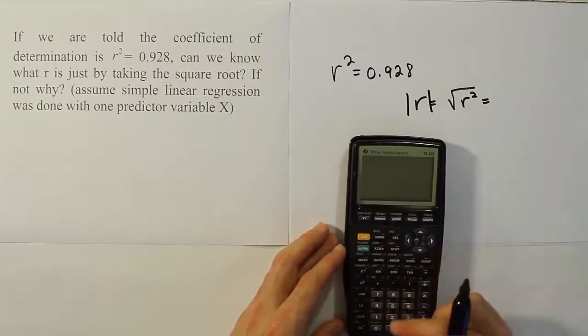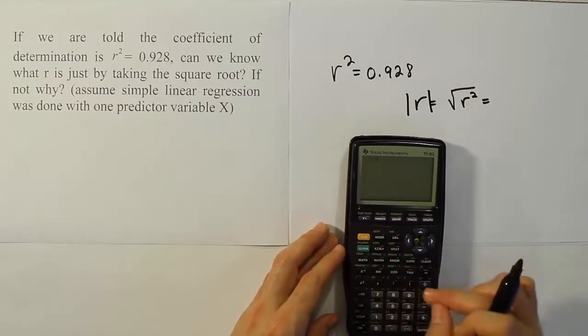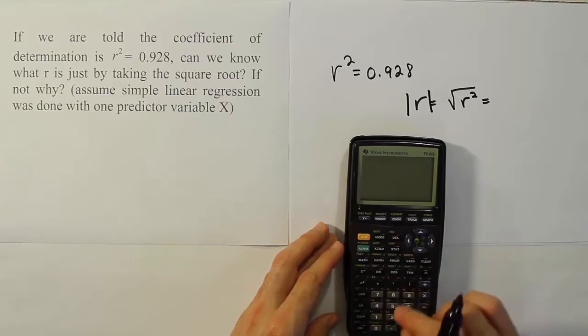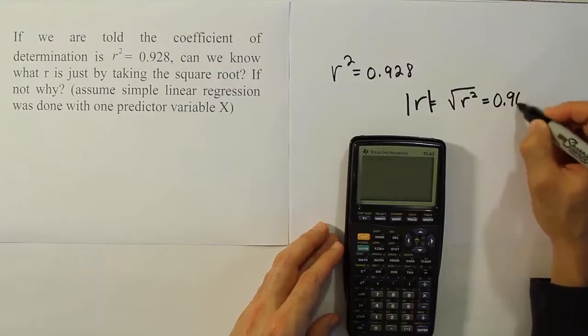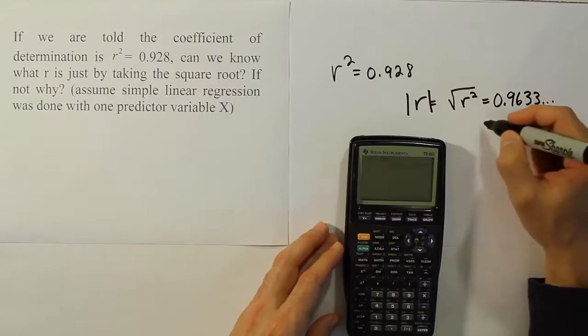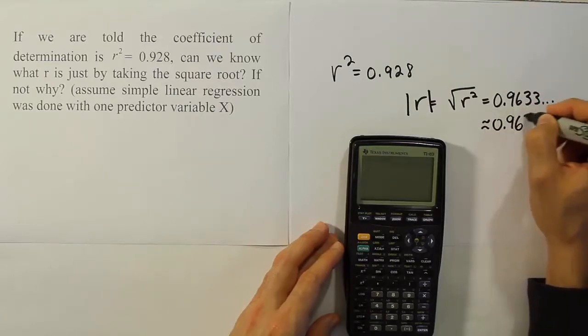So let's figure out what that is first and then we'll talk about that. So the square root of r squared here is 0.928. Close it up, hit enter, and we get the answer 0.9633 dot dot dot.